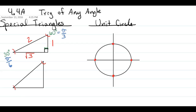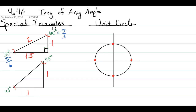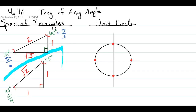Our second special triangle is the 45-45-90 triangle, which you may have seen in geometry. Both legs are 1, and 1 squared plus 1 squared equals 2, so the hypotenuse is √2. This is a 90-degree right angle. In radians, 45 degrees is equivalent to π/4. You'll want to memorize both of these triangles.